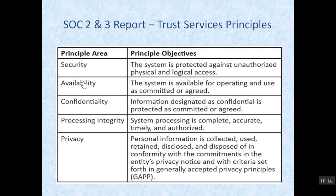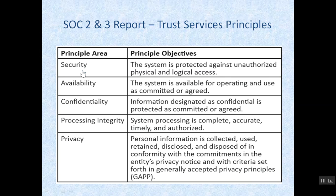Both SOC 2 and SOC 3 reports are based on 5 trust service principles. You must remember these 5 principles. Three you already know — the CIA triad: confidentiality, integrity, and availability. Now add 2 more: security and privacy. Out of these 5 trust principles, 2 are mandatory for any report, and one of those mandatory principles is security. So you can choose security and any one of the other 4 trust principles to form an audit report. Many people confuse privacy and confidentiality: privacy protects personal information, while confidentiality protects non-personal information and data. Personal information includes any information that can be attributed to an identified individual.